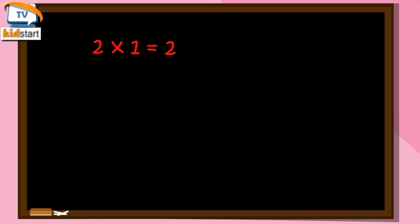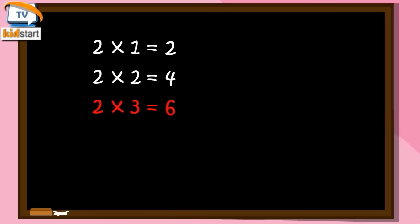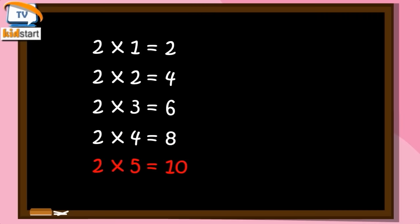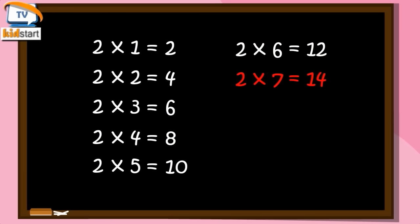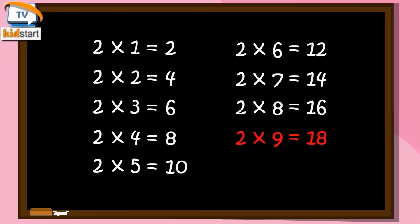Two ones are two. Two twos are four. Two threes are six. Two fours are eight. Two fives are ten. Two sixes are twelve. Two sevens are fourteen. Two eights are sixteen. Two nines are eighteen. Two tens are twenty.